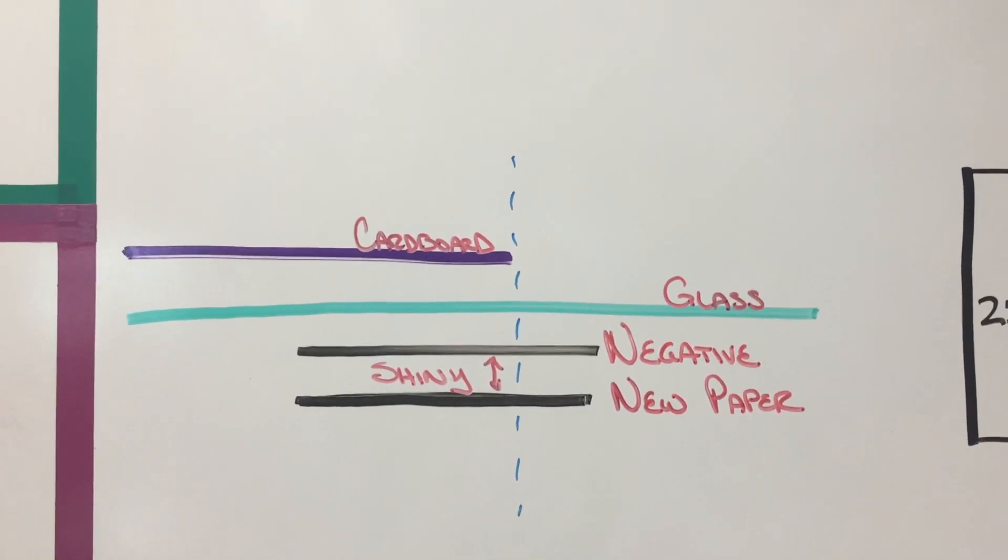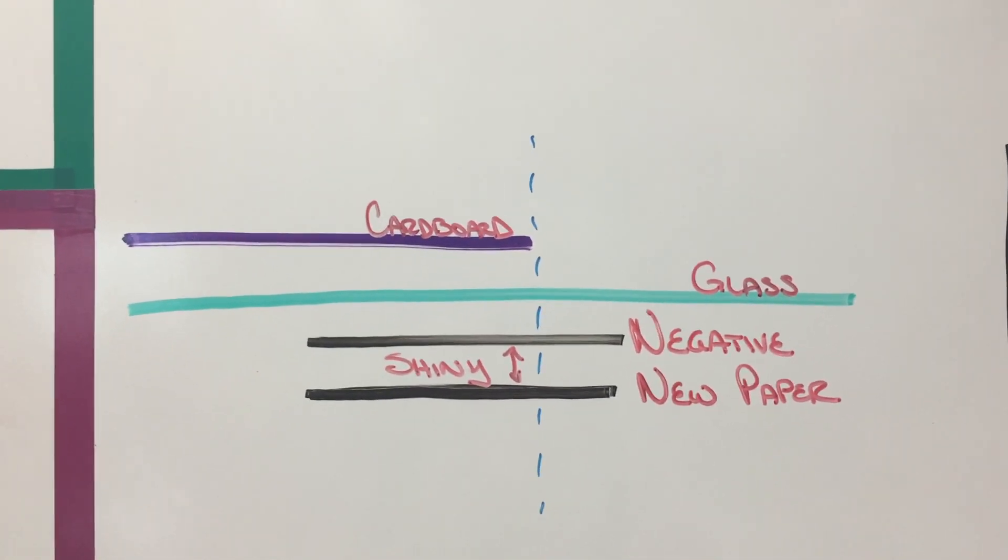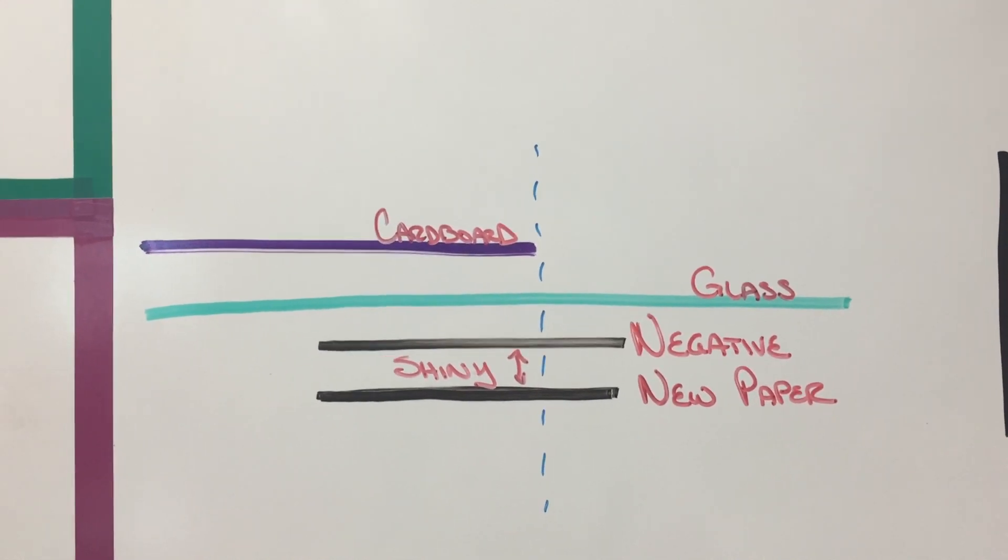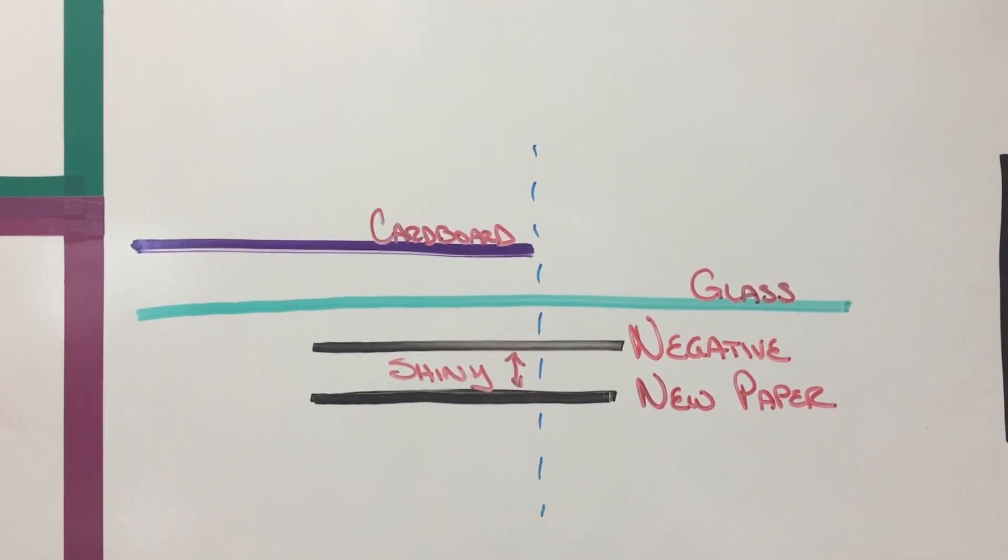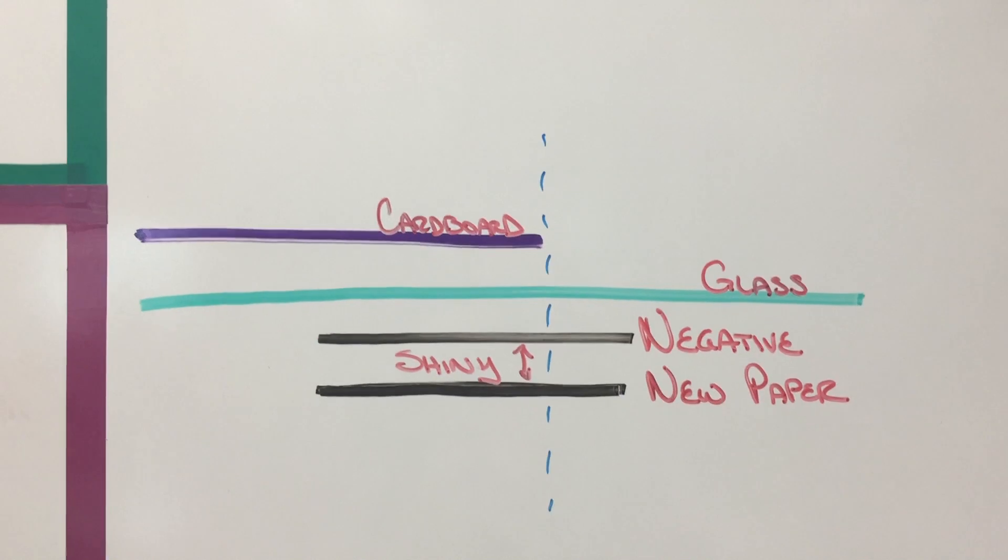When you're making your pinhole positive you're going to make a test strip first. A test strip is going to help you determine what your exposure time should be for the final positive.